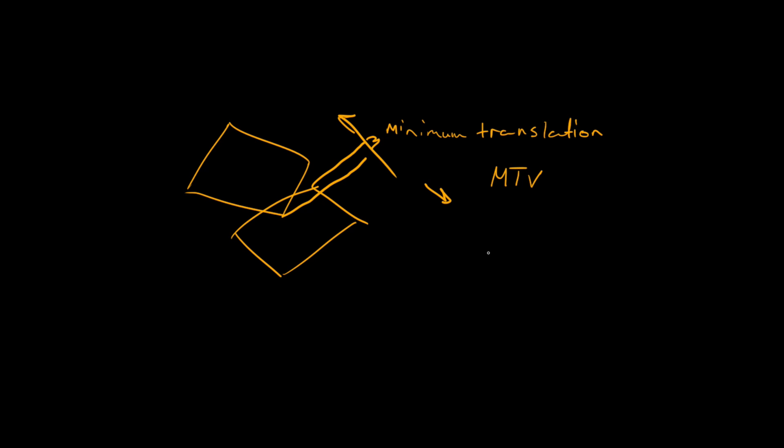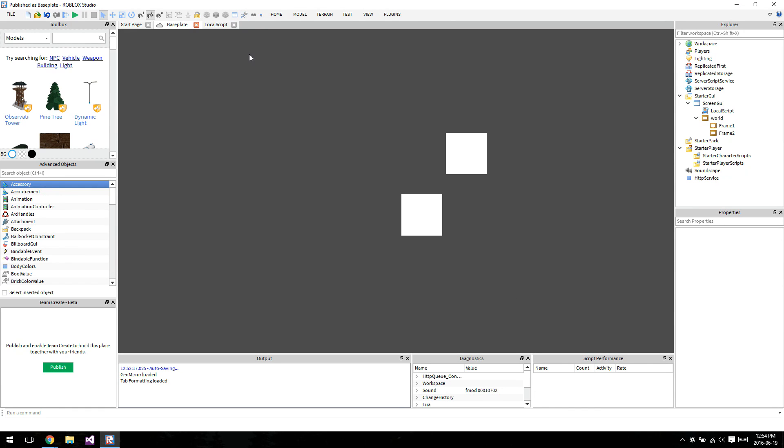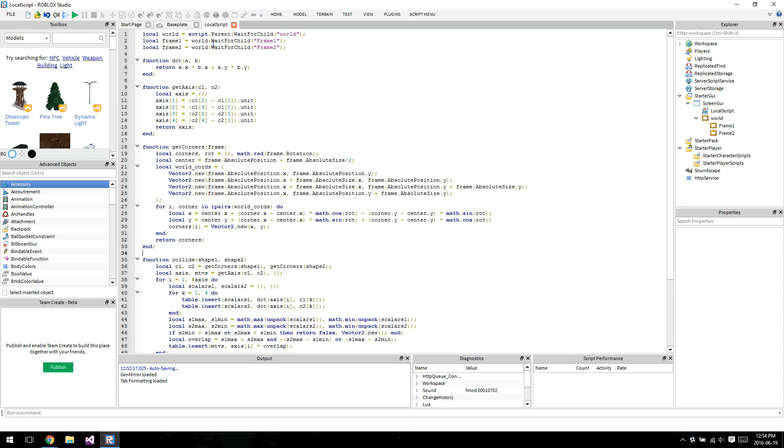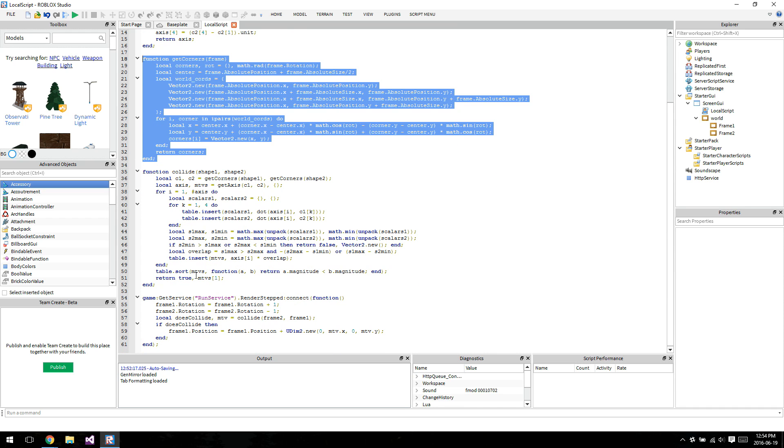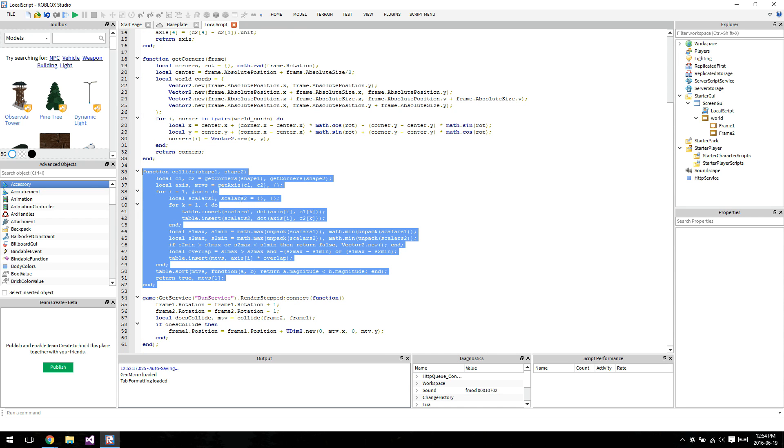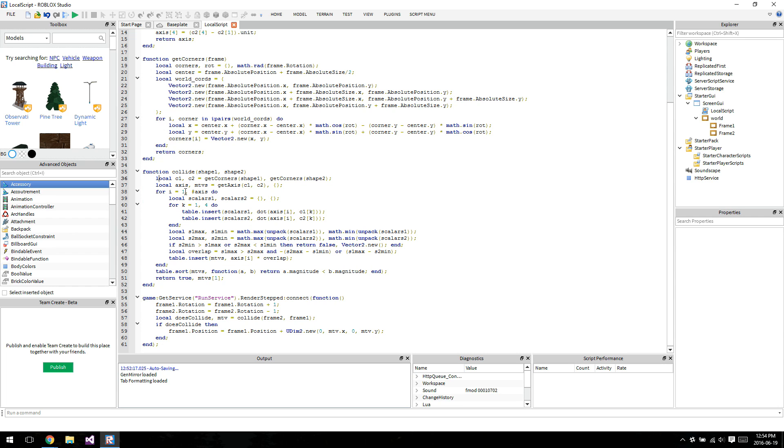So let's hop into Studio and apply this stuff. Okay, so we're in Studio now, before we do anything, let's go over the code. We've got a dot function, the axis, which is just taking the corners, which happen to align with the edges, to get the surface normals of the 2D shapes. We've got a function for getting the rotated corners, and then here we are, the main meat, the collision detection function. So we get the corners, we get the axis, and then we test the axis.